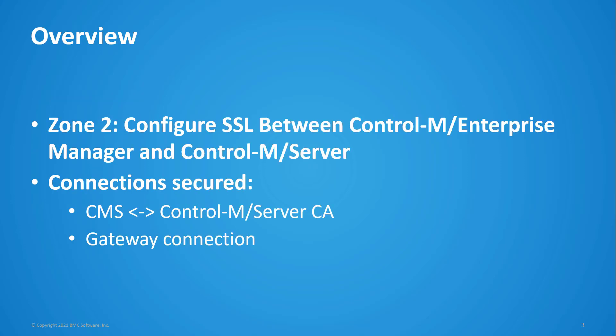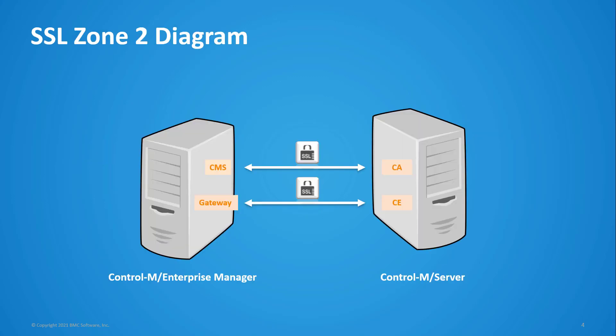Here is an overview of the process. We will configure SSL between the Control-M Enterprise Manager and Control-M Server. The connections that will be secured will be the CMS to the Control-M Server CA and the Gateway connection to the Control-M Server CE. Out of the three possible Control-M Zone configurations, this is SSL Zone 2. Here is a diagram showing this. The Control-M Enterprise Manager CMS is connected via SSL to the Control-M Server CA. Also, you can see the Control-M Enterprise Manager Gateway connected via SSL to the Control-M Server CE.